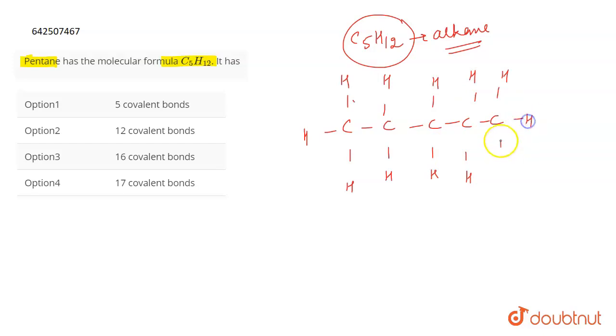So here we have C5H12. Now each bond here is a covalent bond because it is formed by the sharing of electrons. All the bonds in pentane are covalent bonds because they are formed by sharing of electrons.